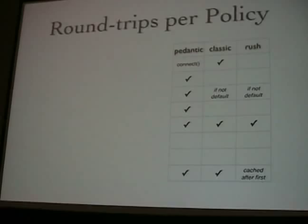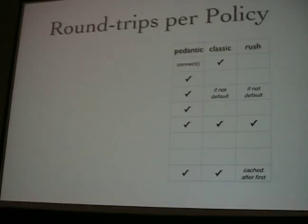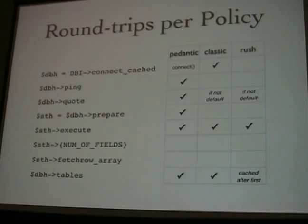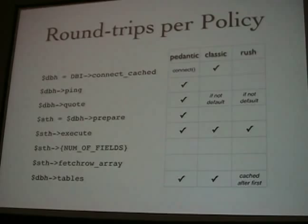It comes with various configurable policies for how it trades round trips for transparency. There's a pedantic policy — it does a lot of round trips, very transparent. The classic policy is the default and tries not to make so many round trips. And if you're really desperate, there's rush, which makes the absolute bare minimum of round trips.